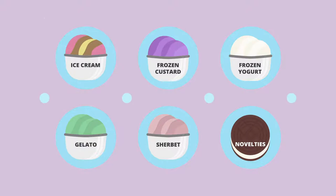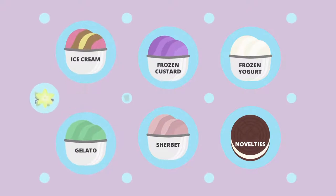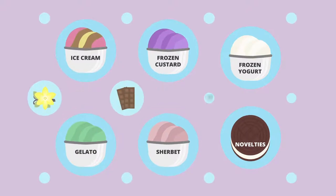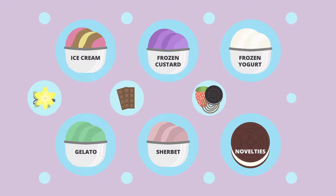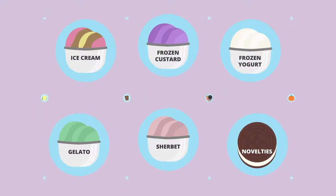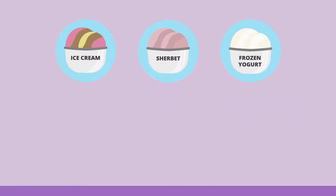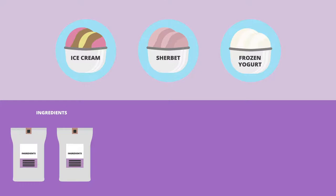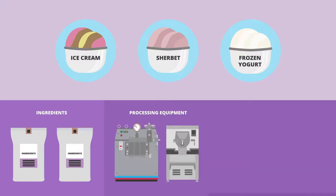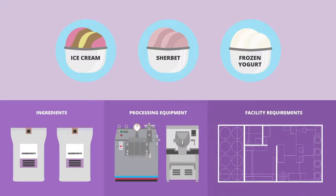Manufacturers usually offer multiple flavors with standards like vanilla and chocolate, a range of fun flavors, and seasonal flavors. Knowing the products you are going to make will determine the ingredients, processing equipment, and facility requirements you will need.